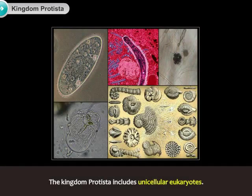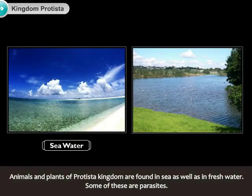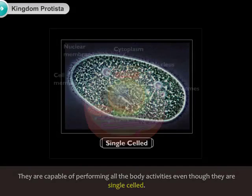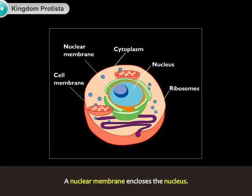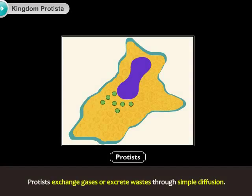The Kingdom Protista includes unicellular eukaryotes. Animals and plants of the Protista kingdom are found in sea as well as in fresh water. Some of these are parasites. They are capable of performing all body activities even though they are single-celled. A nuclear membrane encloses the nucleus. Some of them possess chloroplasts and prepare their food by photosynthesis. Protists exchange gases or excrete wastes through simple diffusion.